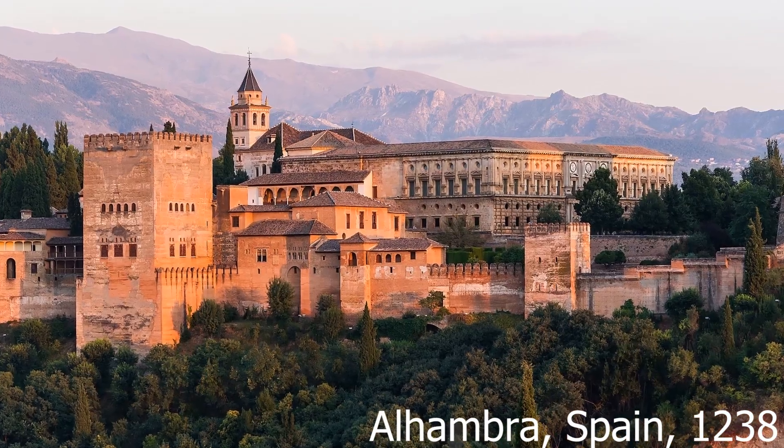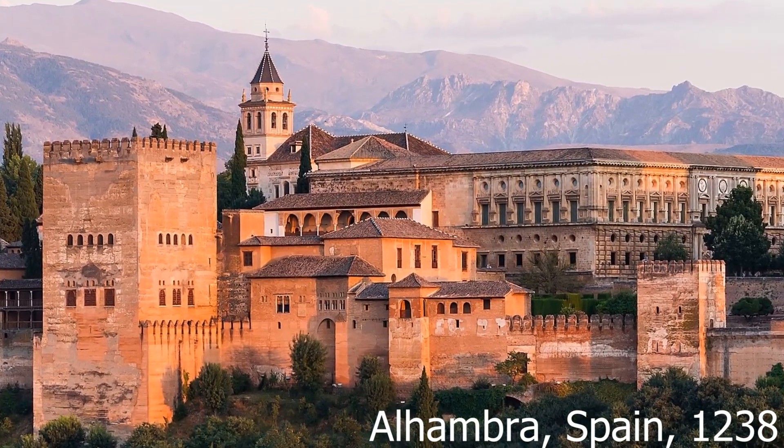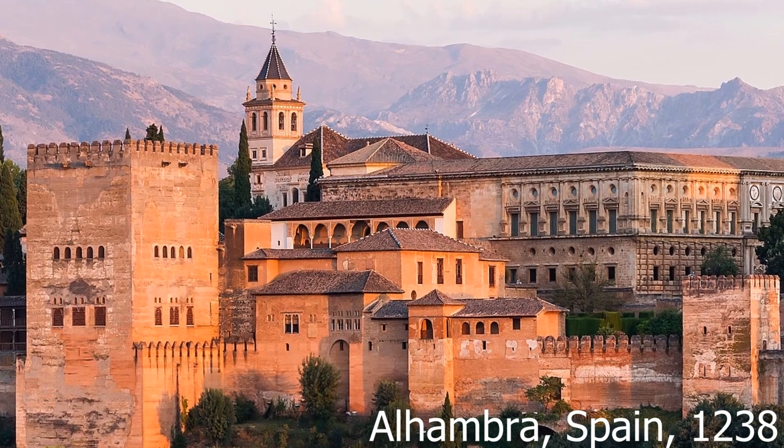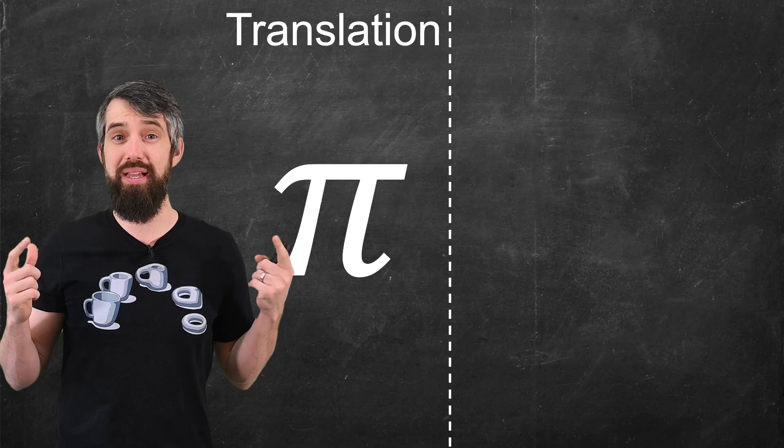All of these beautiful wallpapers came from Alhambra, which is an Islamic-era fortress. And it turns out that it has nearly every one of the 17 possible wallpapers. So what do I mean by symmetries?